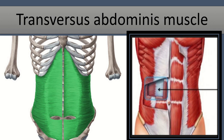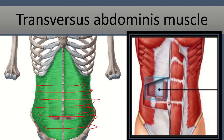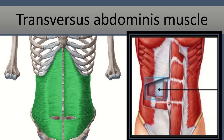The next muscle is the transversus abdominis muscle. Its fibers go directly horizontally — we can see here. In the second picture, we can see the deepest part is the transversus abdominis, and the muscle fiber direction is directly transverse. We can also see a cut section showing the outermost is the external oblique muscle, inside that is the internal oblique muscle, and we can also see the erector spinae muscle.